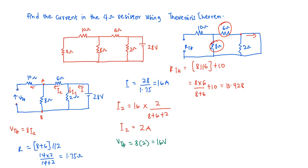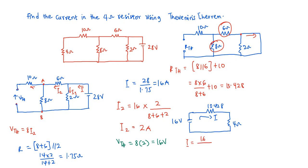Now let's draw the Thevenin equivalent circuit. We have RTH equal to 13.428 ohms, and the 4 ohms resistor, with our VTH of 16 volts. We are going to find current I, which is the current flowing through the 4 ohms resistor. That current I equals the total voltage over the total resistance: 16 divided by (13.428 + 4), which gives us a value of 0.918 amperes. So that is the current flowing through the 4 ohms resistor.